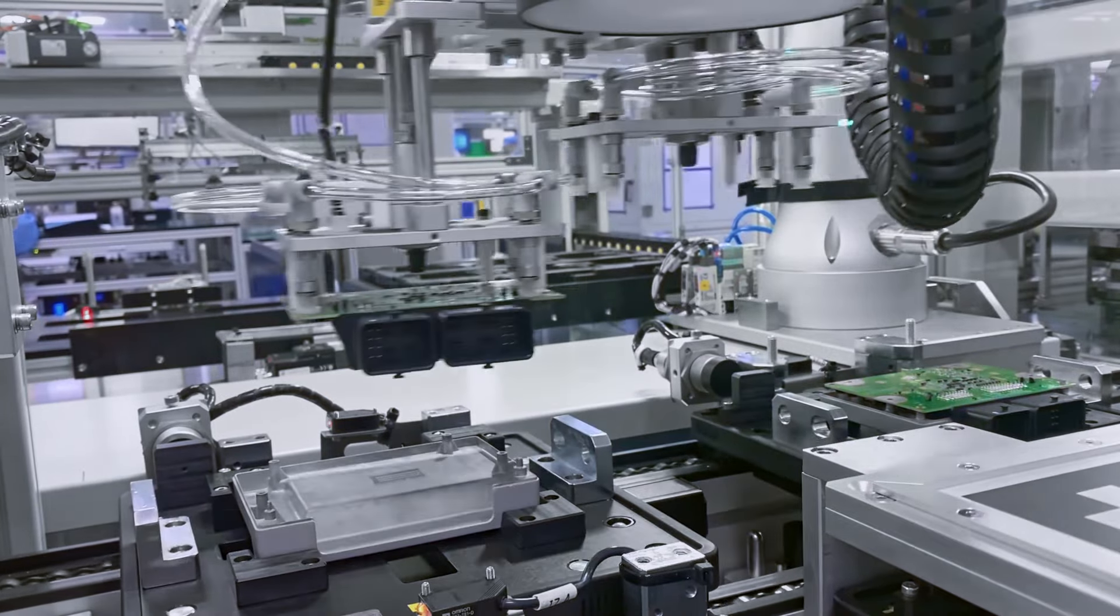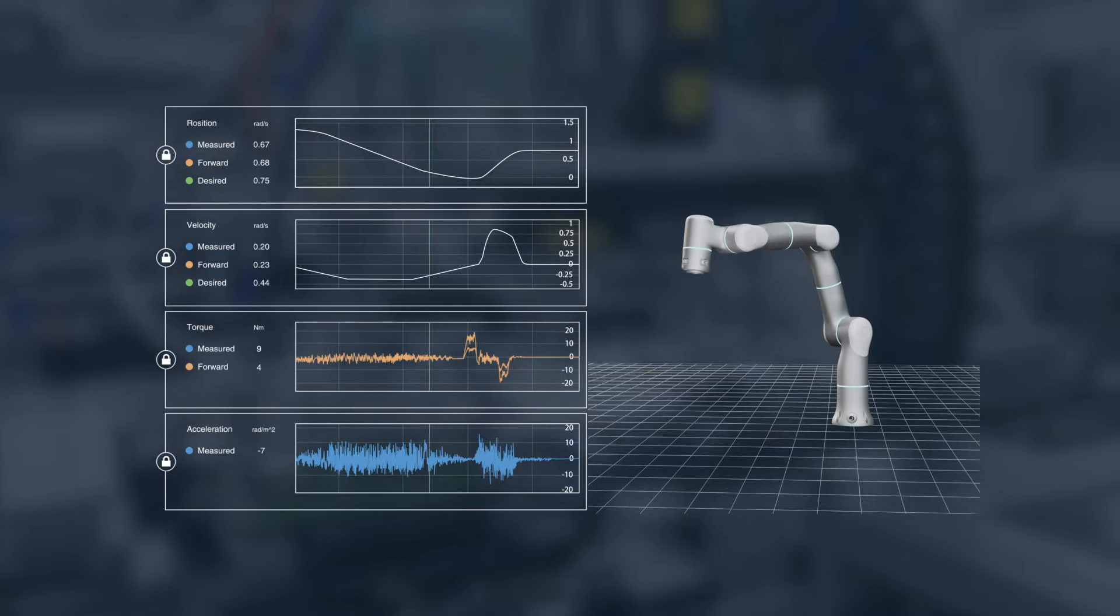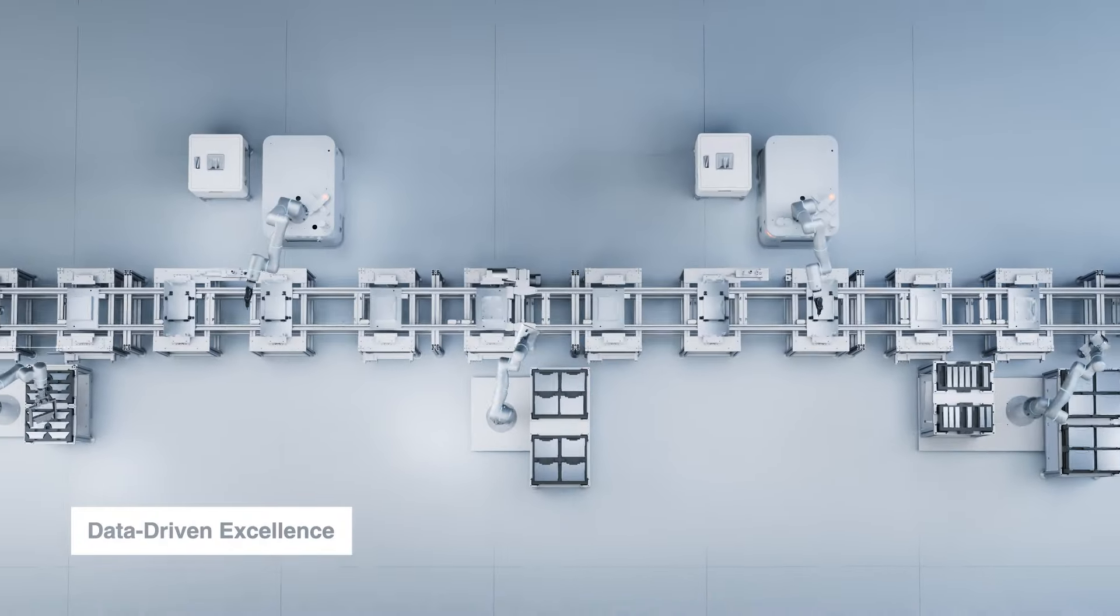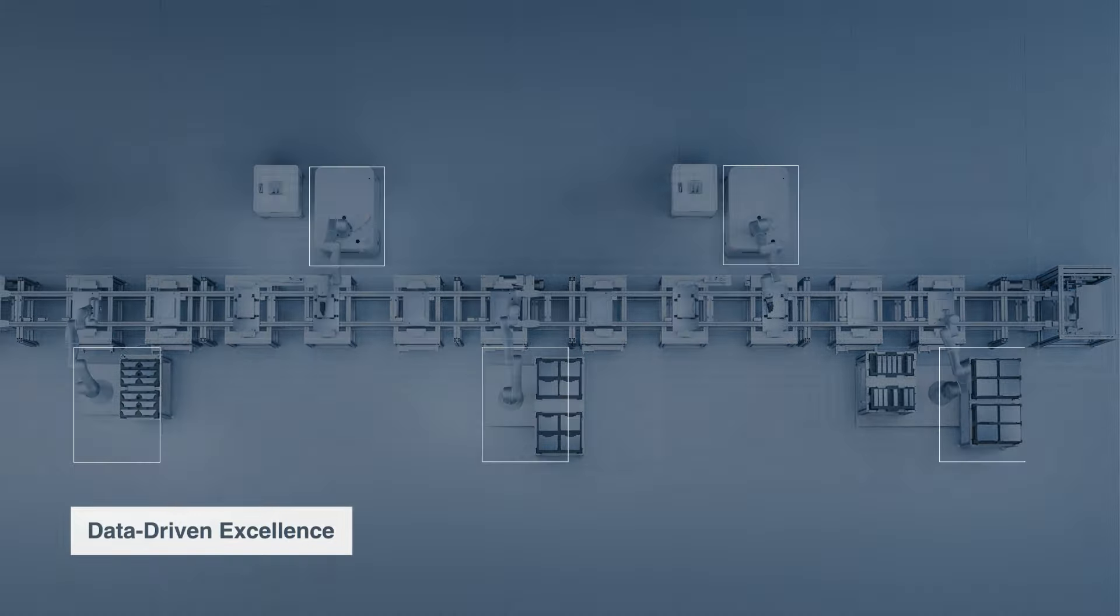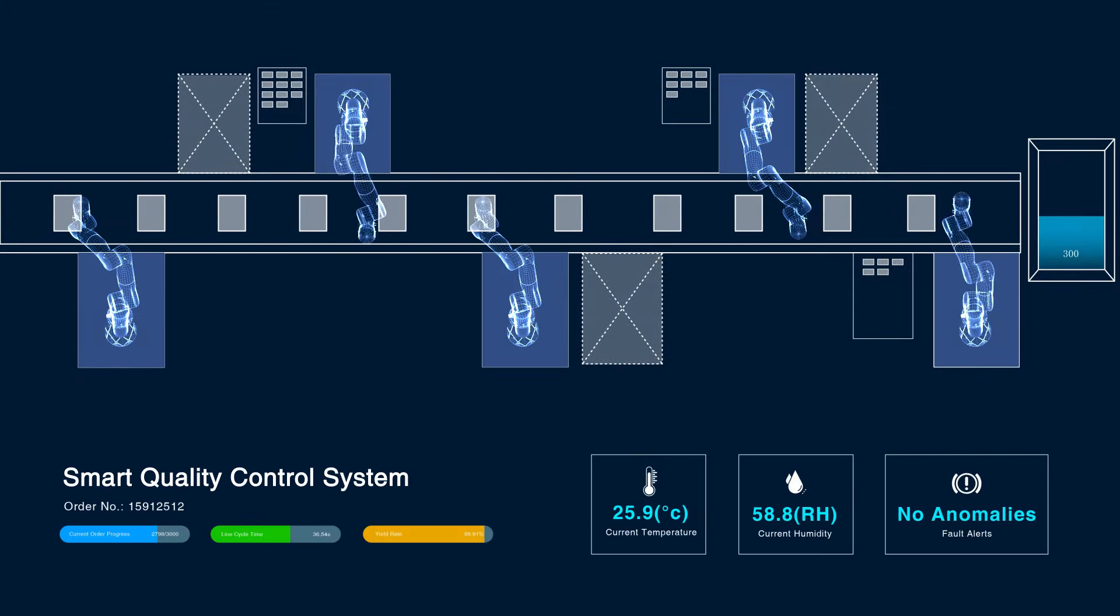Real-time logging and monitoring are possible for every movement and process an Adaptive Robot engages in. This digitalization of production information streamlines quality control, production tracking, and data-driven decision-making.